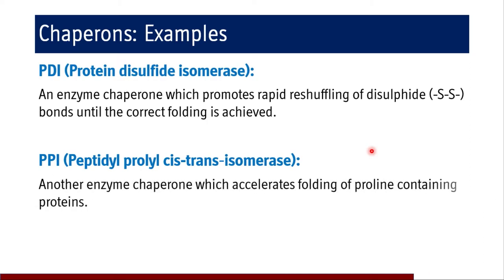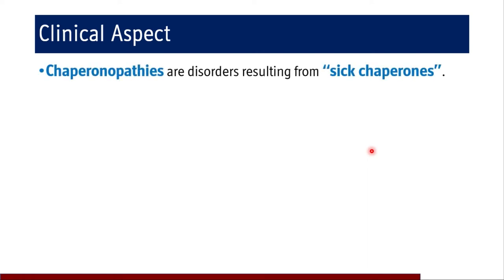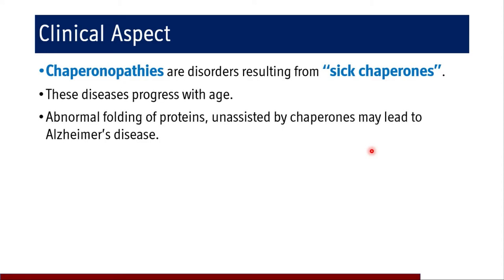There is also PPI — peptidyl prolyl cis-trans isomerase — which acts as a chaperone that accelerates folding of proline-containing proteins only. Coming to the clinical aspect: if chaperones are not functioning properly, those conditions are called chaperonopathies — disorders that result from dysfunctional chaperones. These diseases progress with age; initially manifestations may not be severe enough to detect, but as age advances, manifestations become accelerated.